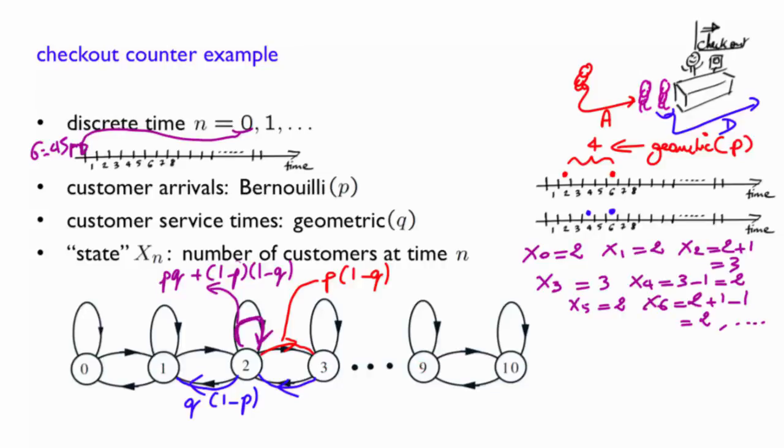For the two extreme states, the transition probabilities are a bit different. If you are in state zero, the queue is empty, and you can go to state one with one additional customer with the probability p. Or there is no new customer coming, and you stay in state zero.